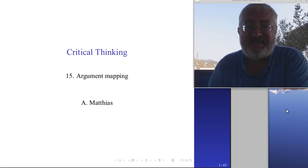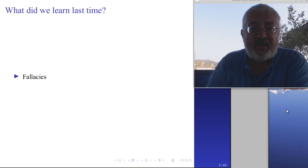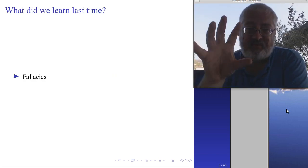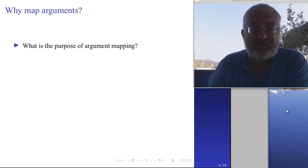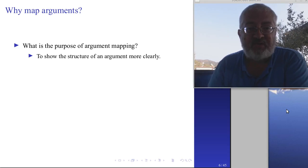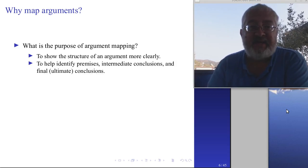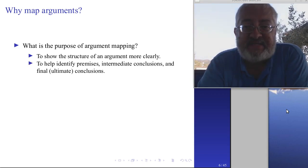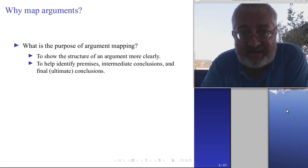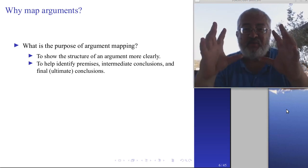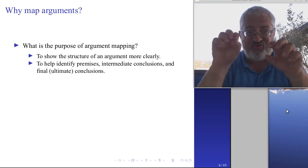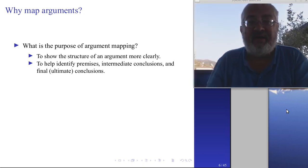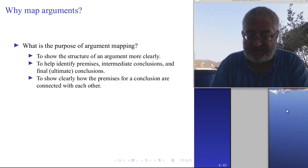If you have understood these things, then it's easy to map an argument. It's just the kind of graphic that you make in order to show the structure of an argument. The purpose of argument mapping is to show the structure more clearly and to help identify premises, intermediate conclusions, and the final ultimate conclusion. Sometimes this can be difficult when the argument is complex and you have it only in text form — it can be confusing to see where the parts are — so you would draw it in a little map, which makes it more clear how the thing is structured.